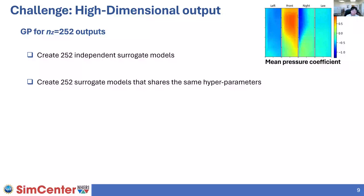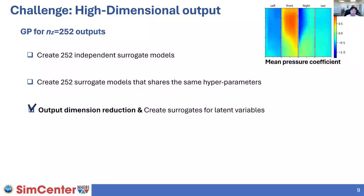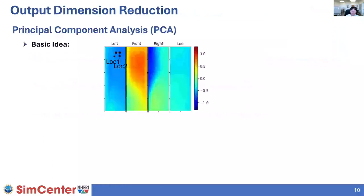However, sharing parameters may restrict the flexibility of the model prediction. So what we chose as an alternative is to introduce an output dimensionality reduction technique, so we can deal with fewer than 252 dimensions and repeat the calibration or training of the surrogate for only the reduced number of outputs. For the output dimension reduction method, we chose principal component analysis.